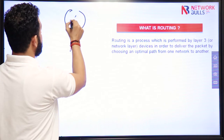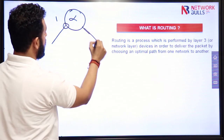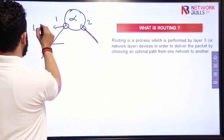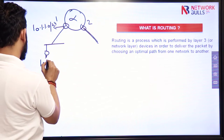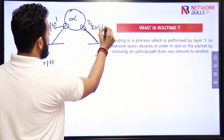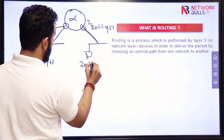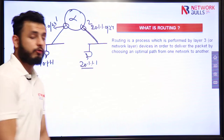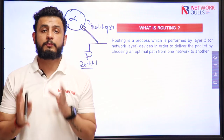Let us say this is my router. This is interface number 1 and this is interface number 2. To interface number 1, a network is connected — let us say 10.1.1.0/24 — and we have a user 10.1.1.1. To interface number 2, another network is connected — let us say 20.1.1.0/24 — with a user 20.1.1.1. Whenever this user sends a packet to the other user, the process of sending that packet from one network to another network is called routing.